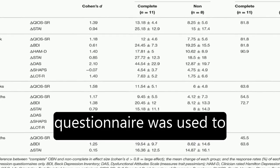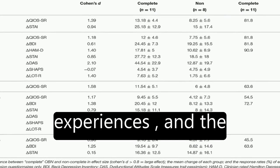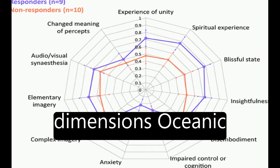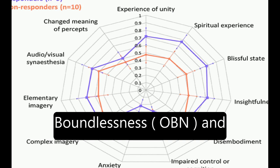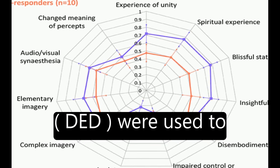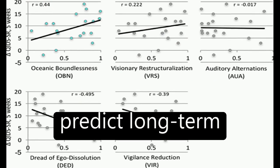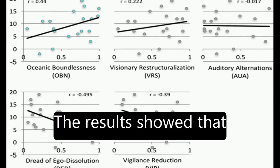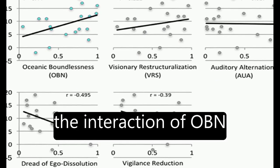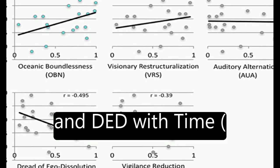The dimensions oceanic boundlessness (OBN) and dread of ego dissolution (DD) were used to predict long-term positive outcomes. The results showed that the interaction of OBN and DD with time,